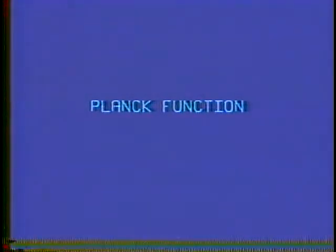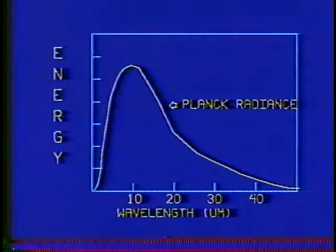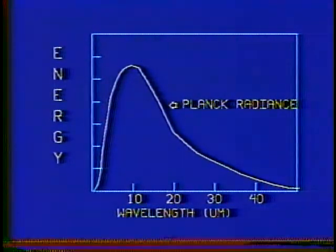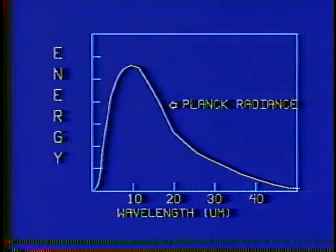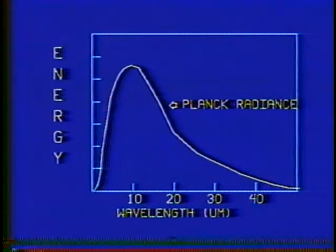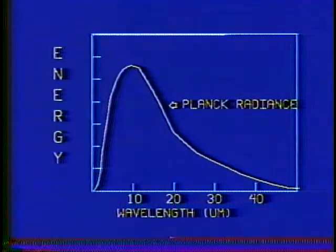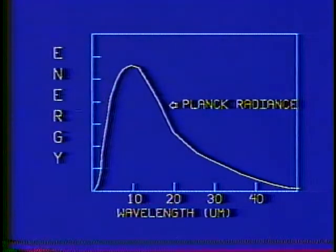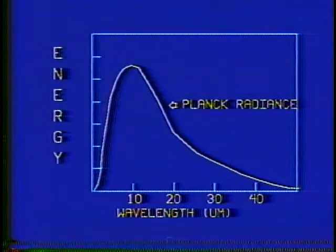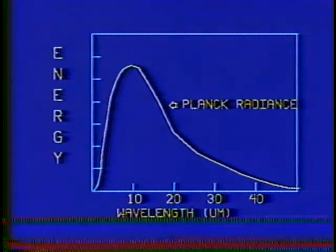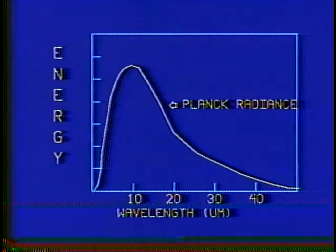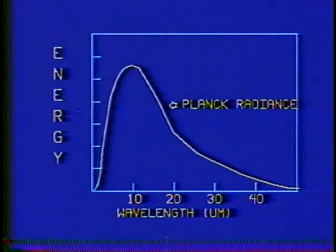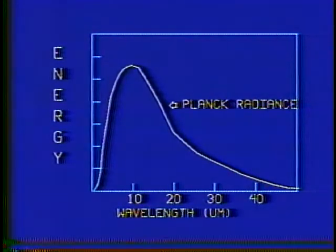The Planck function describes the spectral distribution of electromagnetic radiation for a black body at a given temperature. The shape of the function is similar for all radiating bodies, but warmer radiative temperatures displace the maximum toward shorter wavelengths, while colder temperatures shift the maximum toward longer wavelengths. The graph depicts the radiation curve for the Earth, whose effective radiative temperature is near 255 degrees Kelvin. Most radiation occurs between 5 and 15 microns, with the maximum around 11 microns.